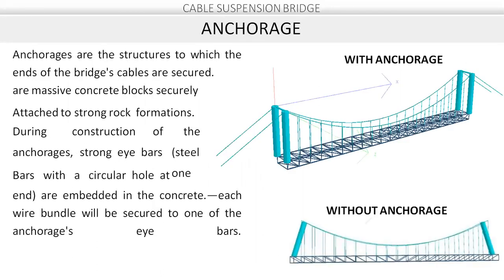Anchorages are the structures to which the ends of the bridge cables are secured. They are massive concrete blocks securely attached to strong rock formation. During the construction of the anchorages, strong I-bars — steel boxes with a circular hole at one end — are embedded in the concrete. Each wire bundle will be secured to one of the anchorage I-bars.